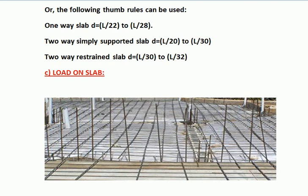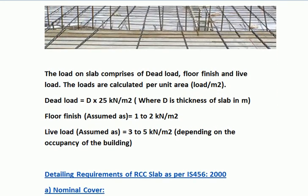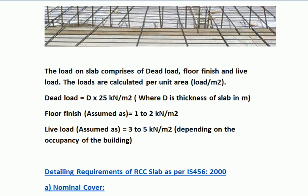Point number 3 is the Load on Slab. The load on slab comprises dead load, floor finish, and live load. Loads are calculated per unit area, i.e., load per meter square. Dead load is calculated as d × 25 kN/m², where d is the thickness of slab in meters. Floor finish is assumed as 1 to 2 kN/m². Live load is assumed as 3 to 5 kN/m² depending upon the occupancy of the building.